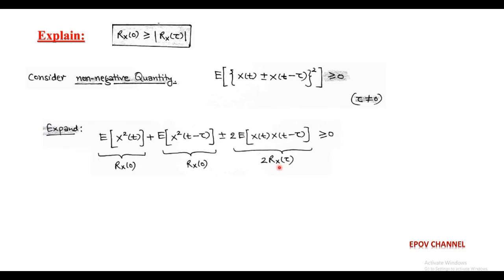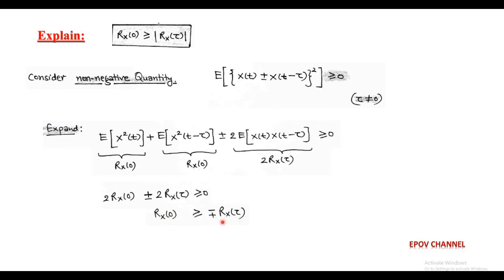So, twice R_X(0) plus or minus twice R_X(tau) is greater than or equal to zero, which means R_X(0) is greater than or equal to plus or minus R_X(tau). In terms of magnitude, we conclude that the mean square value R_X(0) is greater than or equal to the magnitude of the autocorrelation function R_X(tau).